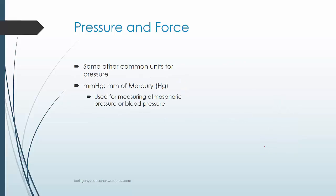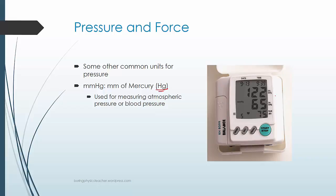Some other common units for pressure: mmHg or millimeters of mercury. Hg is the chemical symbol for mercury. It's used for measuring atmospheric pressure or blood pressure. If you have a blood pressure device, you notice that you have this unit, mmHg.